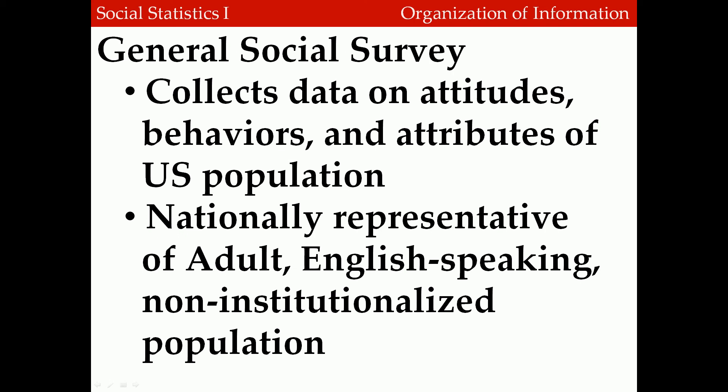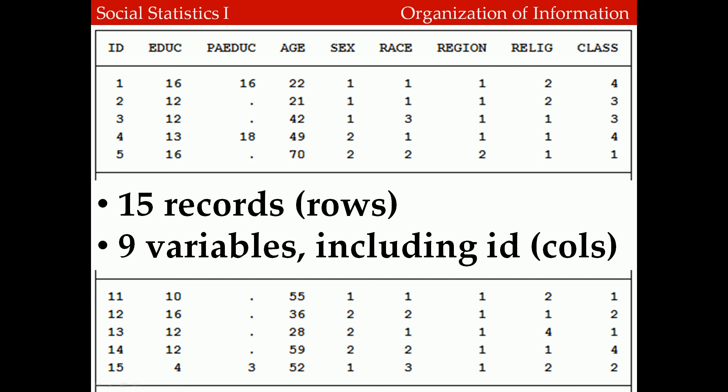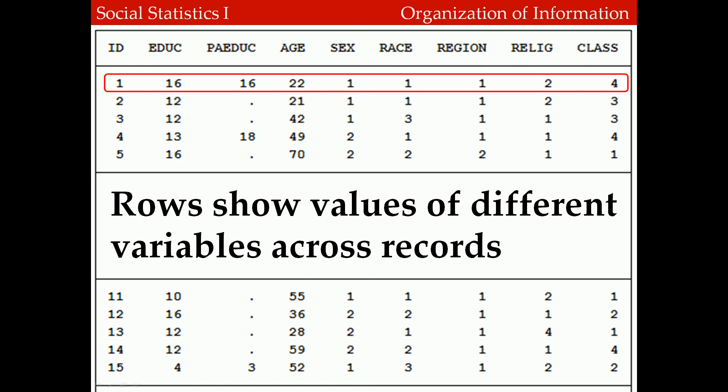Non-institutionalized means people who aren't living in a nursing home, an insane asylum, a prison, or something like that. Here's an example of a simple data set. Notice that it has 15 rows, or records, and 9 columns, or variables. The different rows show responses for different individuals compiled for this data set, and for each of these rows they have values on the different variables.